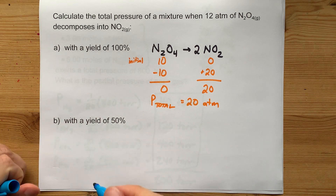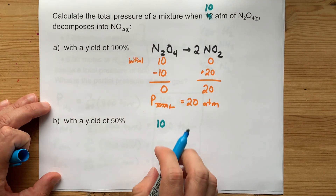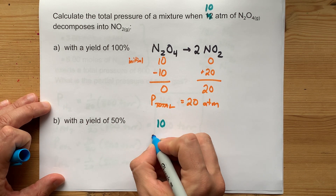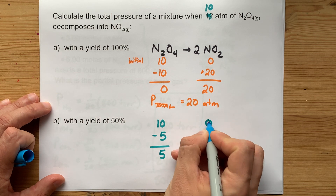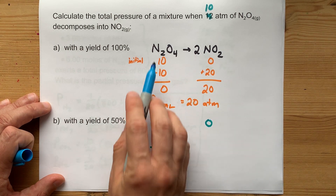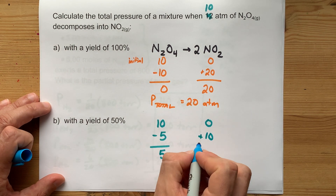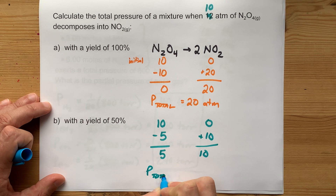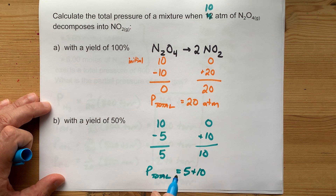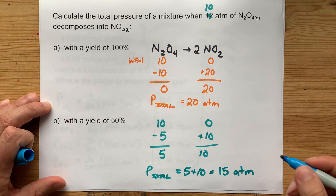At 50% yield, we start with 10 atm of N₂O₄ and only use up half — 5 atm — leaving 5 atm of N₂O₄ remaining. Starting with zero NO₂ and gaining two for every one N₂O₄ consumed, we gain 10 atm of NO₂. The total pressure is then 5 (N₂O₄) plus 10 (NO₂), applying the law of partial pressures, giving a total pressure of 15 atm.